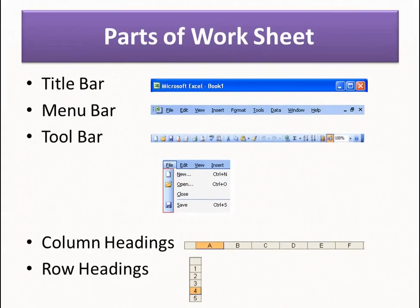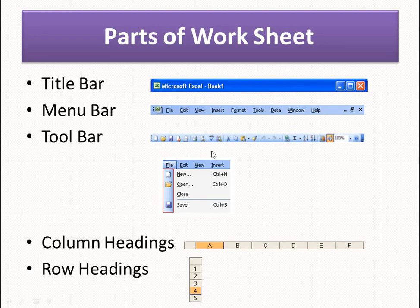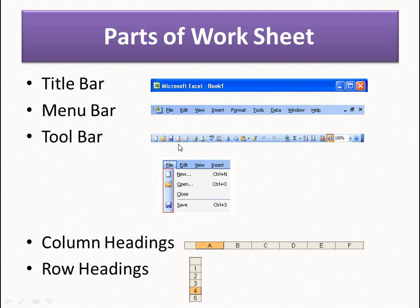The Title Bar shows 'Microsoft Excel Book1' — since the file is not saved, it gets the default name Book1 — along with the Minimize, Maximize, and Close sizing buttons. The Menu Bar has options: File, Edit, View, Insert, Format, Tools, Data, Window, and Help, with its own sizing buttons for the file. The Toolbar options can also be found in the menus — for example, clicking the File menu shows icons for New, Open, and Save.